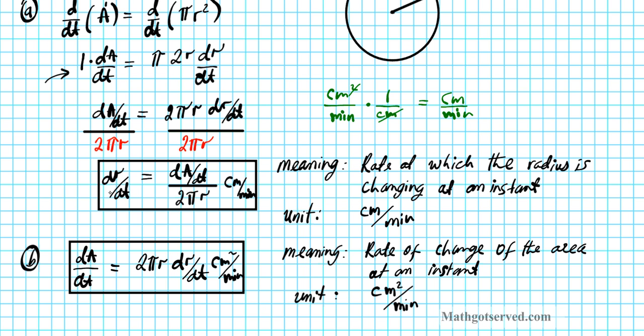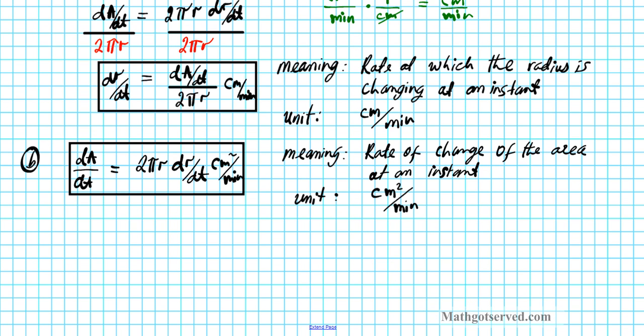I like to use option A, letter A's result, because dr/dt is already solved explicitly. So for part c, dr/dt is dA/dt divided by 2 pi r.